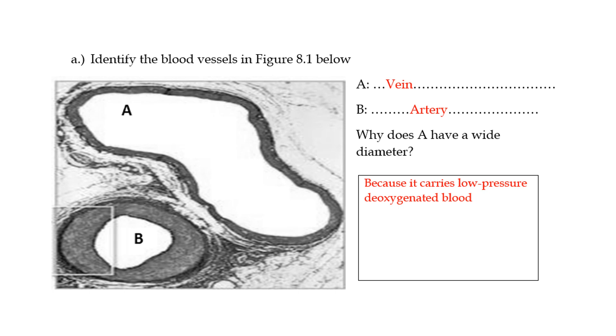Then the question goes, why does A have a wide diameter? Why does the vein have a wide diameter? That is because it carries low pressure deoxygenated blood. The blood flowing through the veins is not high pressure blood. When I explained this in the classroom, I would often tell students whenever you go to get a blood test and they want to draw blood from you, they always say they are looking for a vein. They don't look for an artery because if you burst an artery, that person could die.